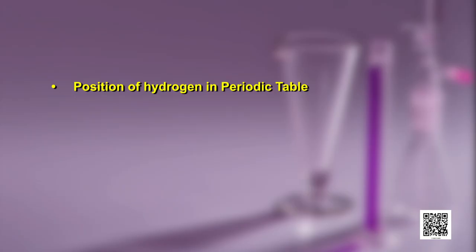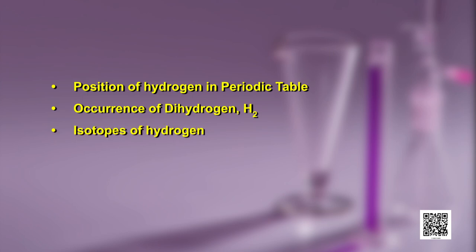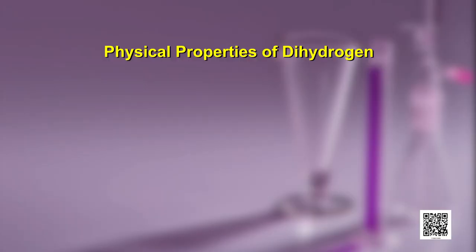Welcome viewers to this episode on Hydrogen Part 2, the second episode on hydrogen from Unit 9 of Class 11th Chemistry Book Part 2. In Part 1, we discussed the position of hydrogen in the periodic table, occurrence of dihydrogen (H₂), isotopes of hydrogen, and preparation of dihydrogen. In this episode, we will explain the physical and chemical properties of dihydrogen, uses of dihydrogen, and various types of hydrides. Let us have a quick look at the physical properties of dihydrogen.